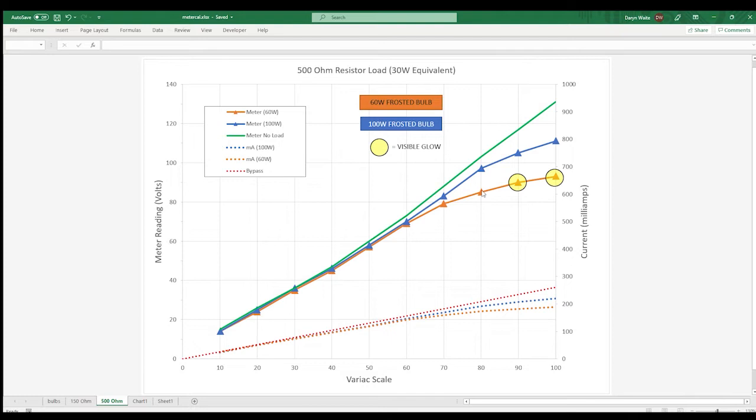The meter reading versus Variac position with no load and I've included it here for reference. The orange and blue lines are the data for 60 watt and 100 watt light bulbs. As you can see for lower levels of voltage the voltage at the DUT tracks almost the same as the no load voltage but starting at around 60 volts they begin to diverge.